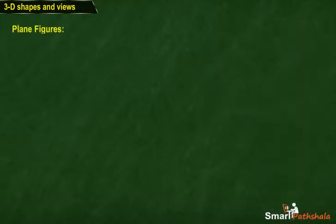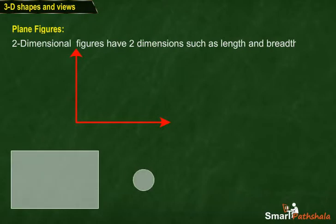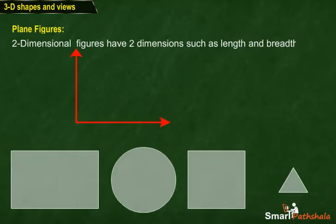Plane figures have two dimensions like length and breadth or radius. These figures are called two-dimensional figures or 2D. Examples include rectangle, circle, square and triangle.